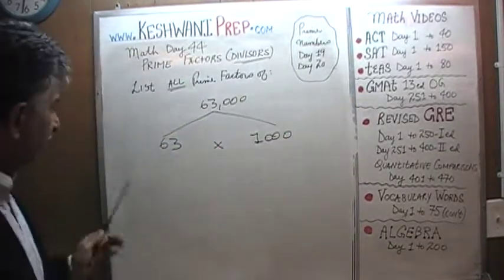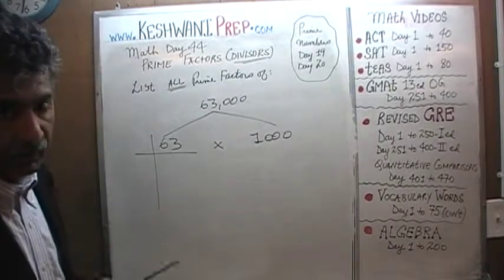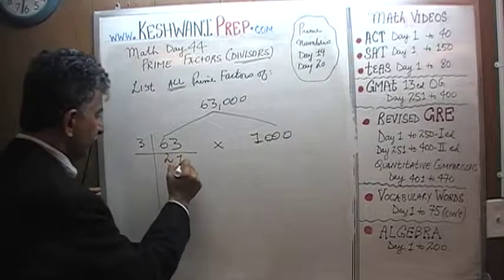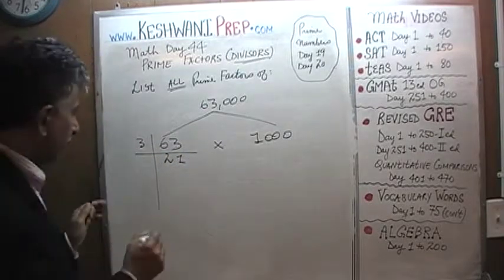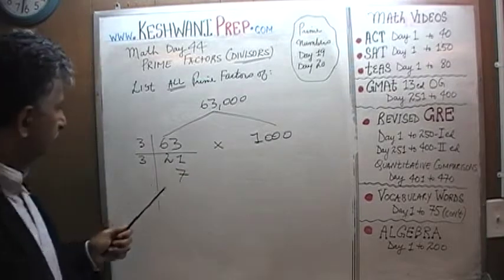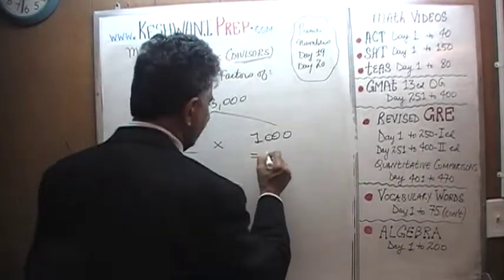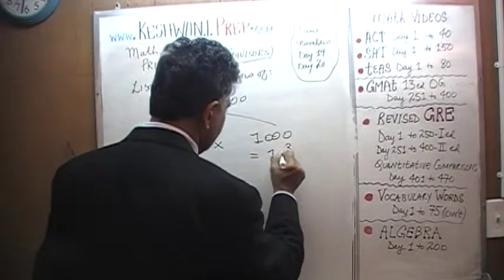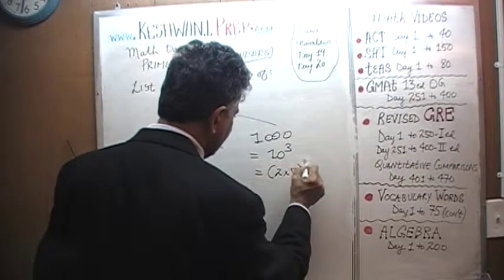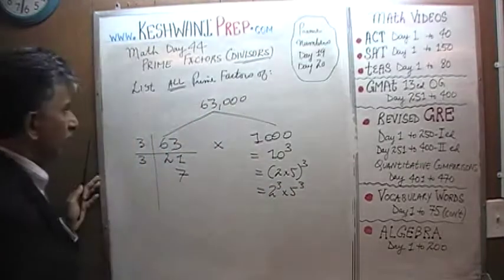Let's take care of 63 first. 63 is not an even number, so we are going to divide by 3. 6 has two 3s, giving 21. 21 can be divided by 3, giving 7. So 3 times 3 times 7 is 63. And 1,000 is simply 10 raised to the 3rd power, which can be written as 2 times 5 raised to the 3rd, which is 2 cubed times 5 cubed.